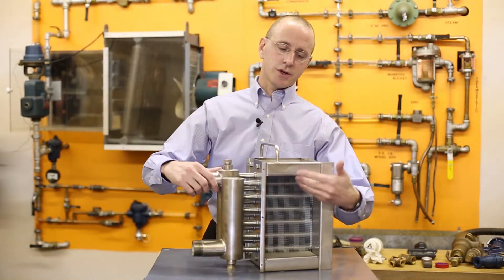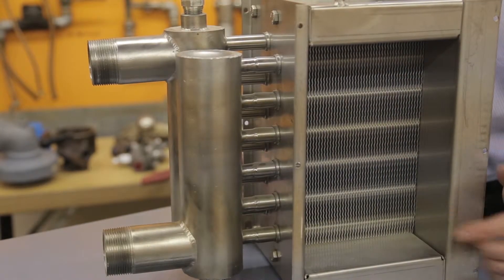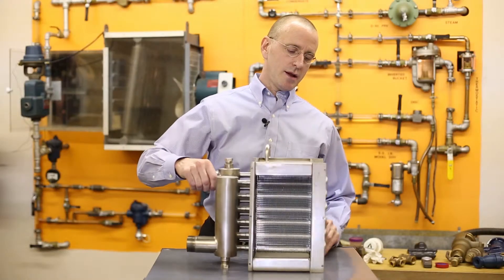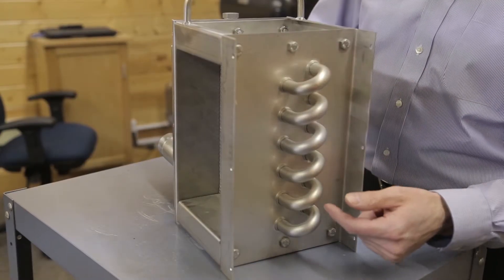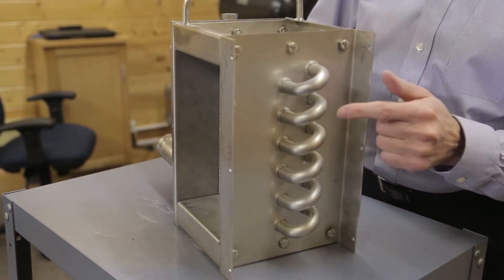The tubes are expanded into the fin collar using mechanical expansion. And then on the back side there's either brazed u-bends or the u-bends are bent out of the tubing itself.